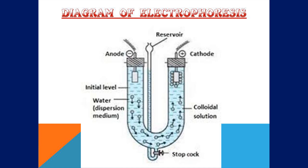The slide shows the diagram of electrophoresis. The experimental setup has a U-tube in which two electrodes are connected at the two limbs. A negatively charged colloidal solution is taken, and as the connections are made, the colloidal particles start drifting towards the opposite electrode, confirming the presence of negative charges. As time passes, one limb becomes darker in color whereas the other limb becomes lighter, confirming that the colloidal particles are carrying charge.